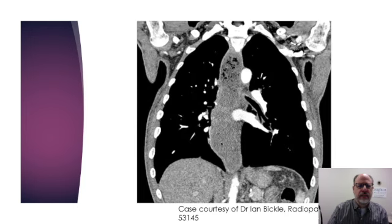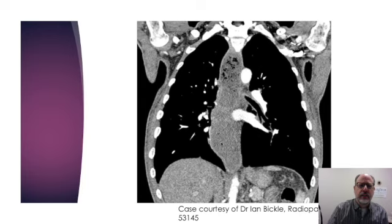This is a CT scan in the coronal projection of a patient with achalasia. In the middle of the image there is a dilated tubular structure that represents the esophagus. You can see that there is mottled material present within the esophagus, which reflects ingested food.